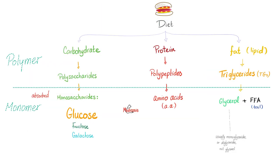Here is the cheeseburger. It has carbohydrate, it has protein, it has fat. Those are the macromolecules — these are the polymers — and then you digest them. So carbohydrates become polysaccharides, then disaccharides, monosaccharides, and the monosaccharides are glucose, fructose, and galactose. These are monomers.